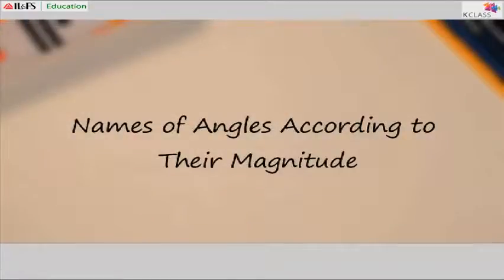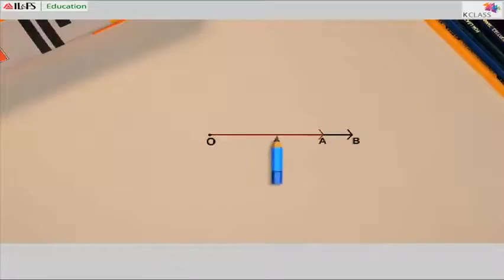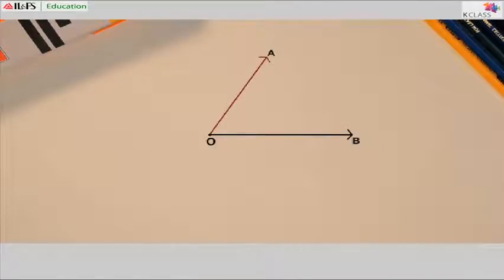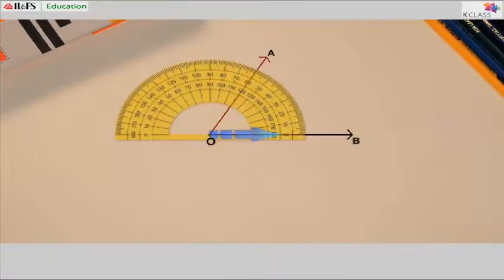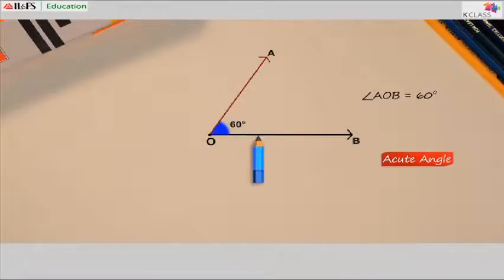Names of angles according to their magnitude. I am going to move arm OA to see the different types of angles it forms. When OA and OB are in the same position, there is no distance between them — zero — so no angle is formed. That is a zero angle. Now look at this position of OA. An angle is formed. Let's measure it using a protractor. Angle AOB measures 60 degrees. An angle less than 90 degrees is called an acute angle. Here angle AOB is 60 degrees, so it is an acute angle.